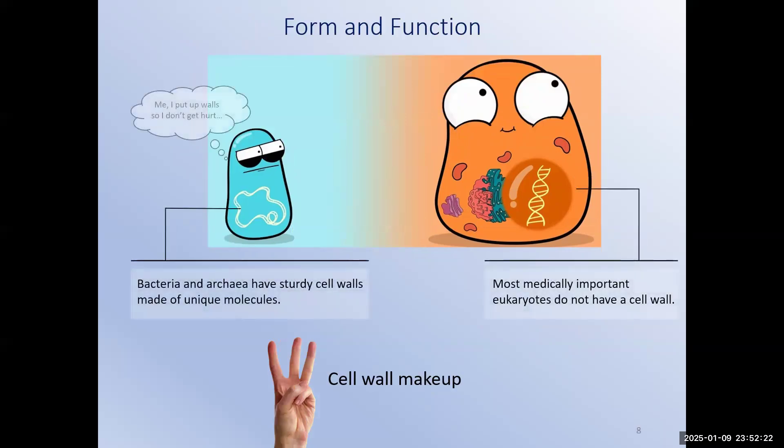Finally, cell wall makeup. The makeup of a microorganism's cell wall is not only important to how the cell functions, but it's critical to helping us identify the microbe. Most bacteria and archaea have cell walls. What this cell wall is made of varies depending on the species, but it's usually there in some form. While there are eukaryotic cells that have cell walls, like plants and fungi, most eukaryotic cells we will study really generally lack a cell wall. Again, there are exceptions, and we will discuss those in the upcoming chapters.